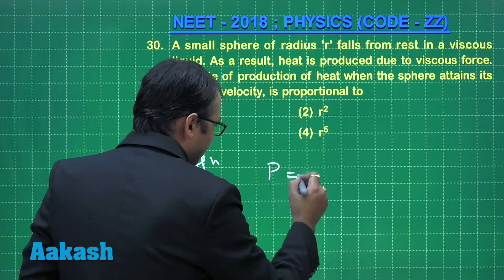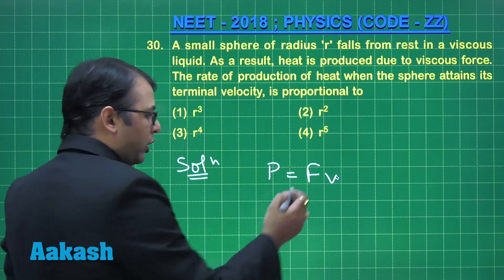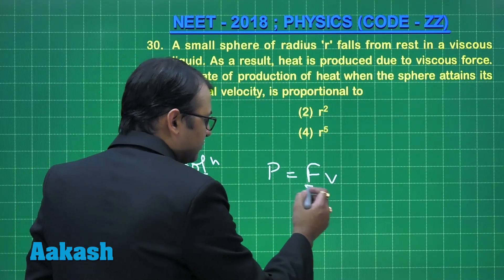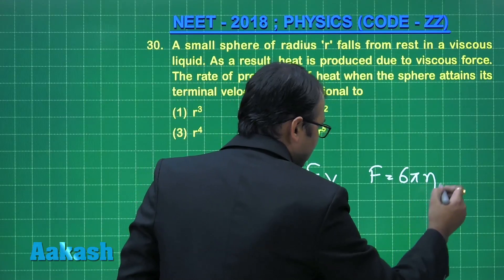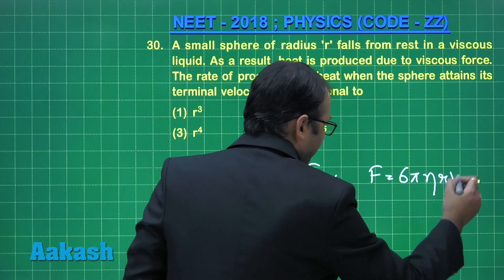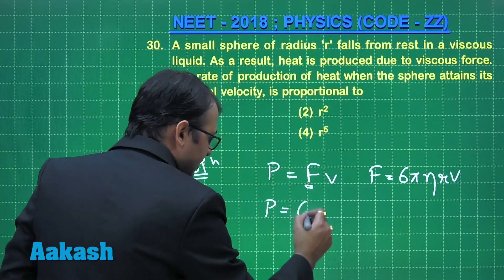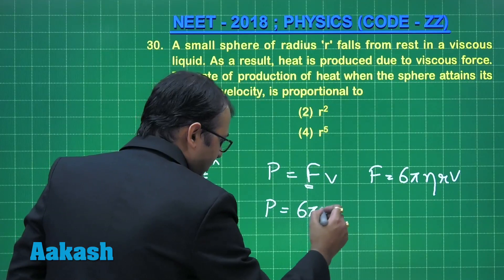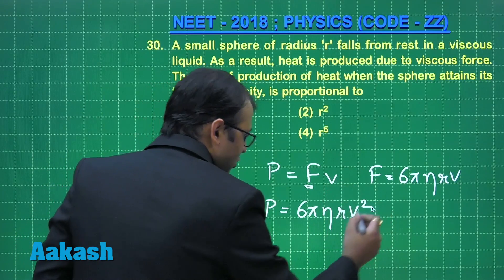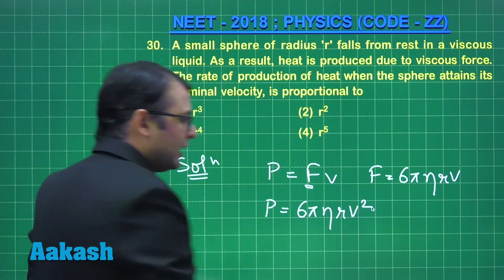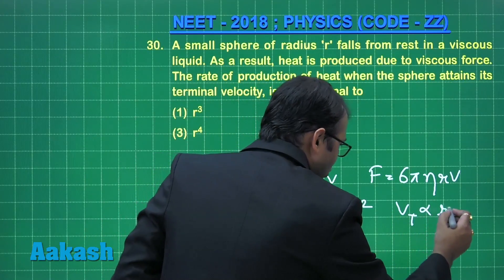Power is given by force into velocity. The force here is viscous force. The formula for viscous force is 6πηrv. Applying this: power equals 6πηrv × v, which becomes proportional to v squared. As we know, terminal velocity is proportional to the square of the radius.